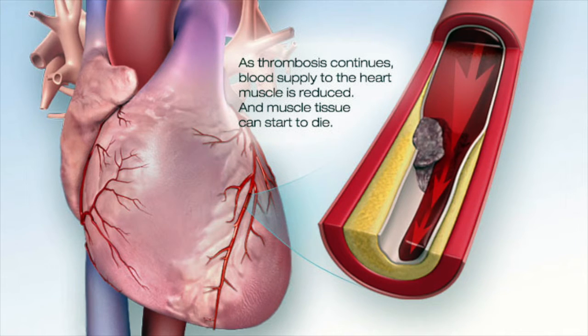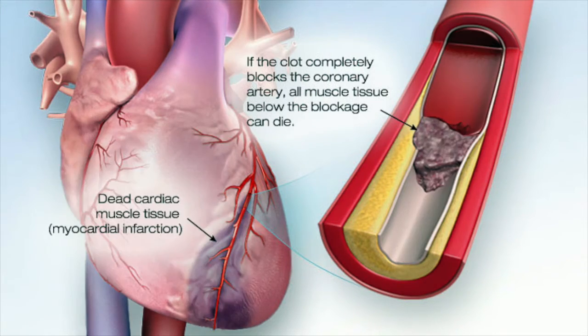Muscle tissue can start to die. If the clot completely blocks the coronary artery, all muscle tissue below the blockage can die.